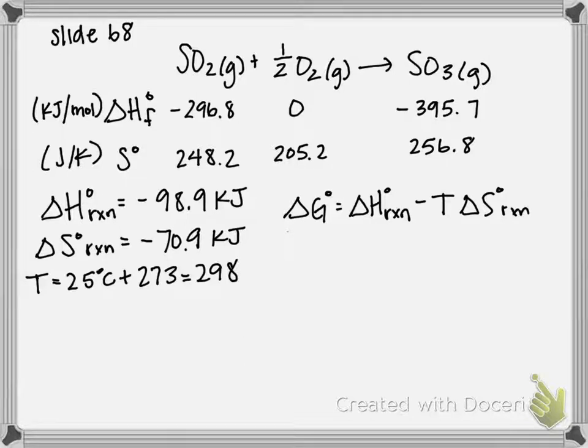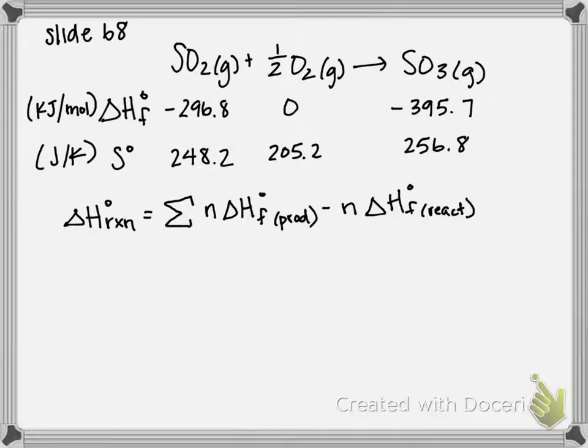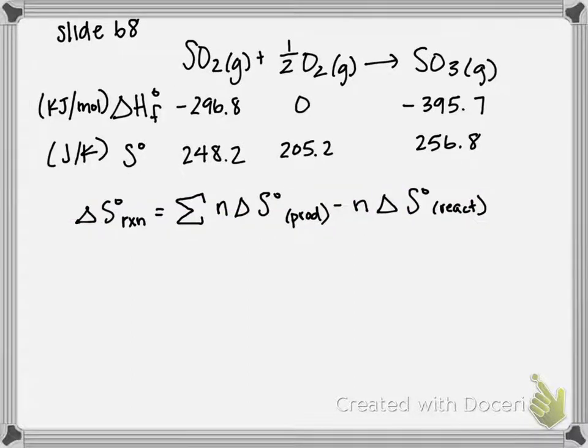We can calculate the standard Gibbs free energy change of our reaction if we use the standard enthalpy change of our reaction minus temperature times the standard change of entropy of our reaction. To do that though, we are going to have to calculate the standard enthalpy and the standard entropy change using this reaction which I'm highlighting, that's for enthalpy, and the equation that we've used in a previous problem for the change in entropy.